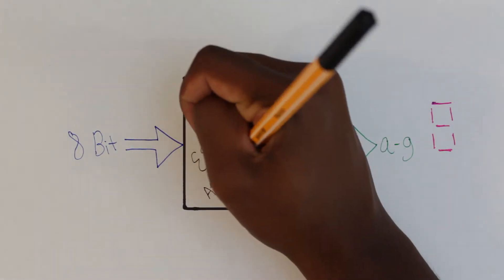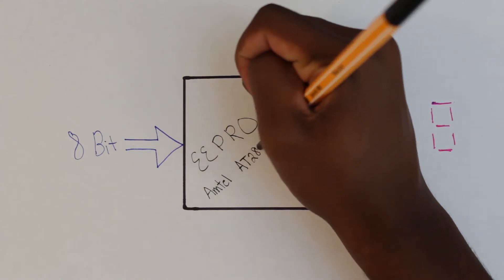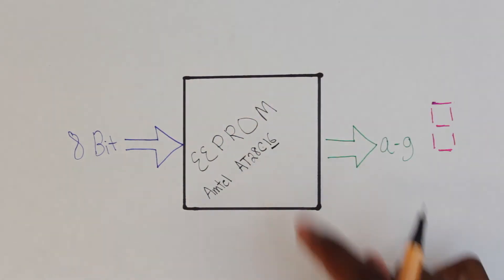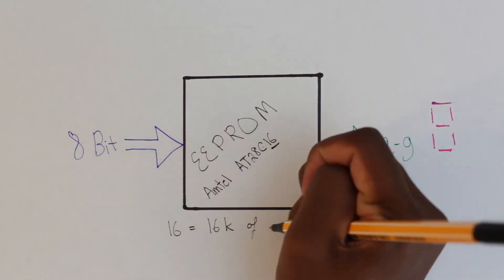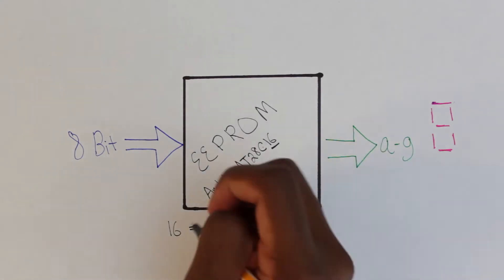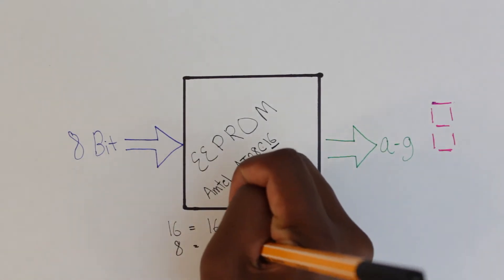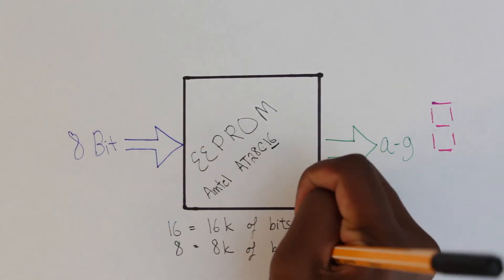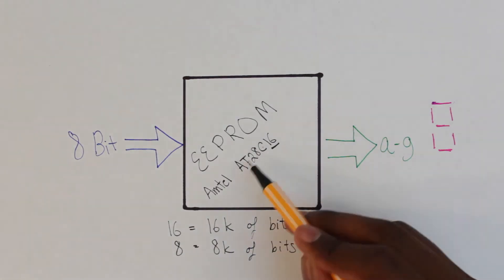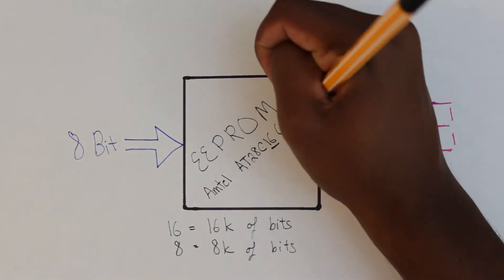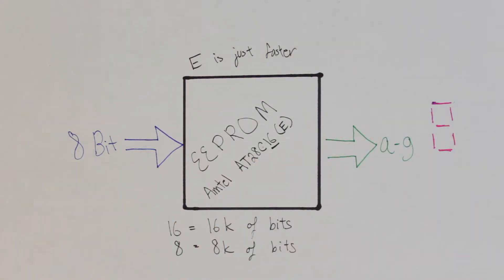The EEPROM I have is the Atmel AT28C16. The 16 at the end represents the number of bits, so 16K is 16,000 bits, and the AT28C8 is the same chip, just 8,000 bits of memory. You might also find the letter E on the end of the chip, and the E version is just faster.